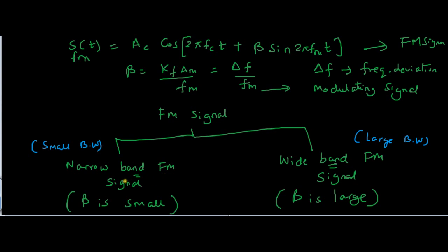Each of these signals behaves differently based on the value of beta — that is, in the frequency domain, both signals are quite different in nature. Narrow band FM looks almost close to AM and also has the same bandwidth as an amplitude modulated signal. In this video, I will only concentrate on narrow band FM signal.